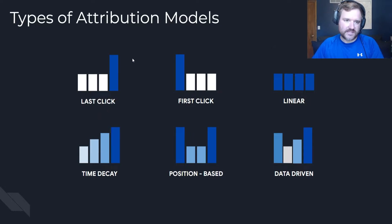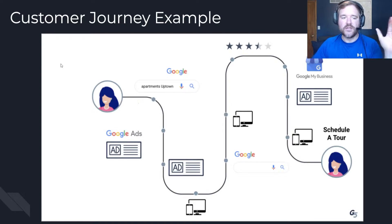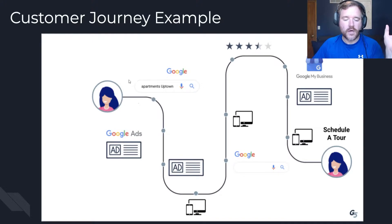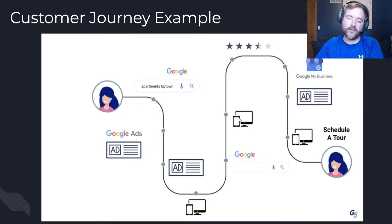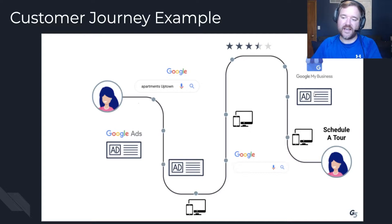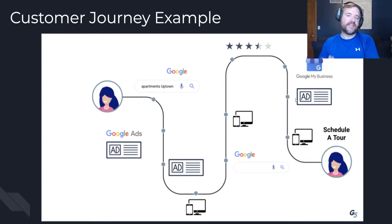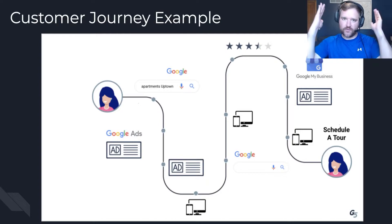It's really important to understand the purchase journey or purchase path that a typical consumer makes. In this example, a user has done a search for apartments in Uptown. They might see an ad on desktop, come back on mobile and see an ad again, read some reviews, then come to the site again on mobile or tablet, do another search, go to Google My Business, see another ad, and then finally complete the conversion action. It's not typical for a user to do one search and convert on the spot.